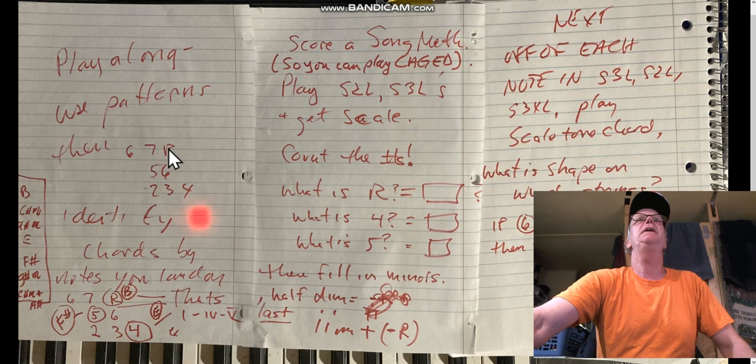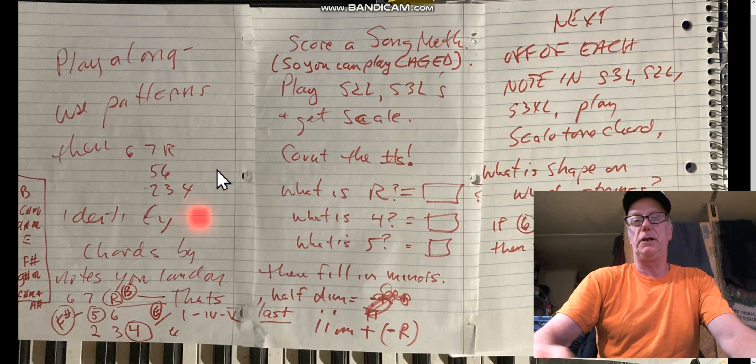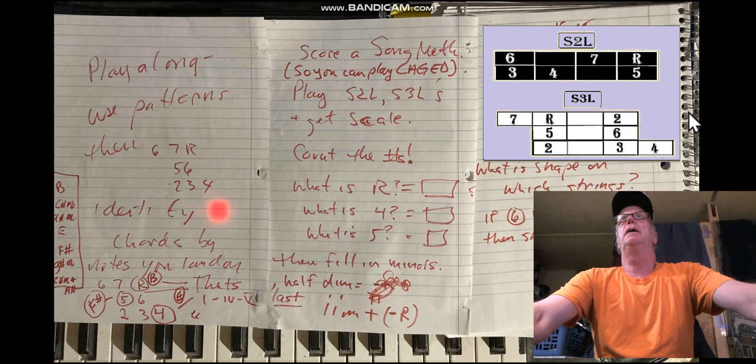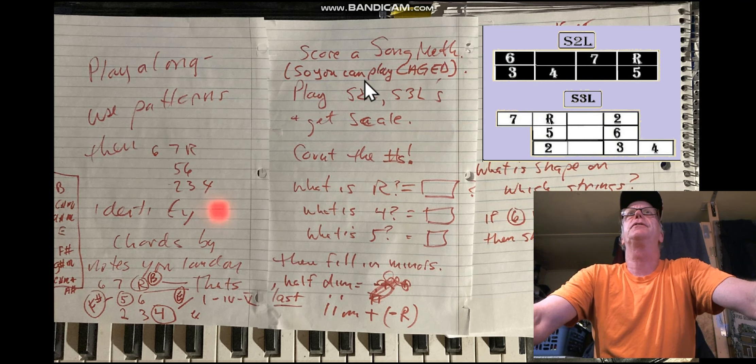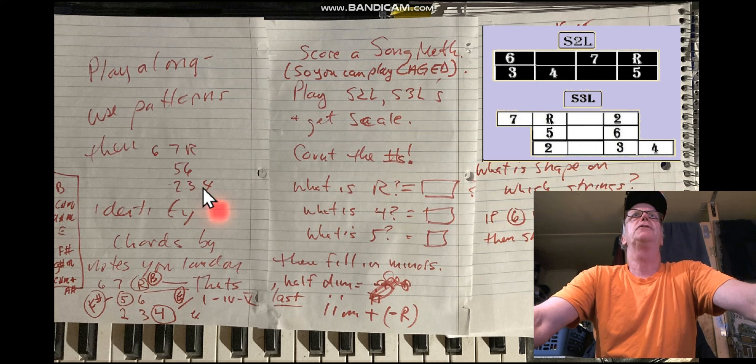At this point all I know is that it's in B, and I know that B is the root. So we look at our S3L, our S2L. I got the S2L and the S3L here, so you see this six-seven-root, five-six, two-three-four.